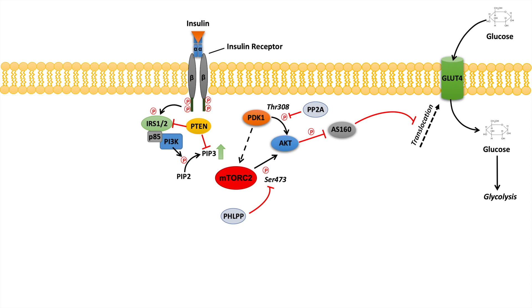That's important to recognize: in order for glucose uptake to occur in an insulin-stimulated cell, we need AKT to be turned on, and that happens through phosphorylation at threonine 308 and serine 473 via the mechanisms we just talked about.